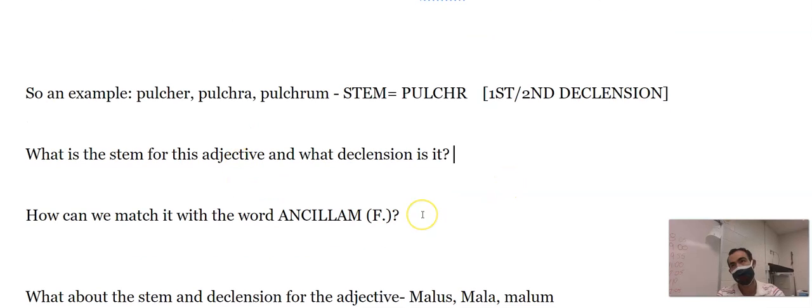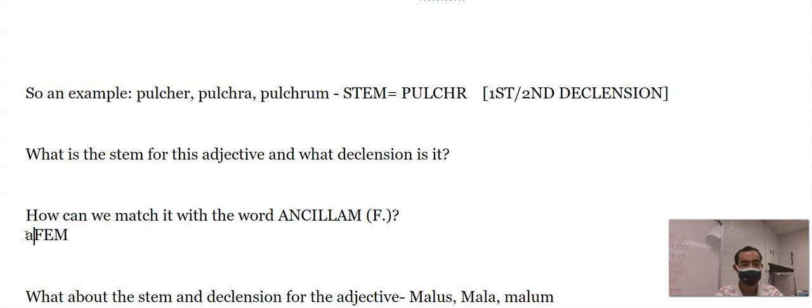Now I know it's first and second declension. I'm going to match it with the word ancillam. Ancillam is a slave girl, so that makes sense that the gender is feminine. Now, the case. It's got an am. If you look in the charts, am is accusative. And if you look at the charts, it'll tell you it's singular.